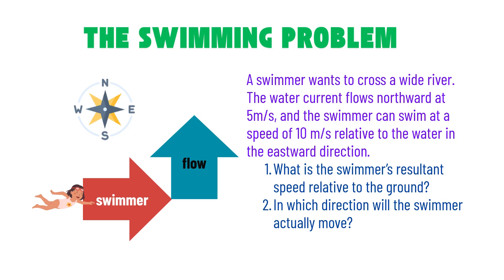Let's dive into a simple swimming problem. Imagine a swimmer trying to cross a wide river. The current is flowing north at 5 meters per second, while the swimmer can swim east at 10 meters per second relative to the water. What will the swimmer's actual speed be relative to the ground, and in which direction will the swimmer really move? The swimmer won't go perfectly east — the current pushes him off course, so his path becomes slanted.